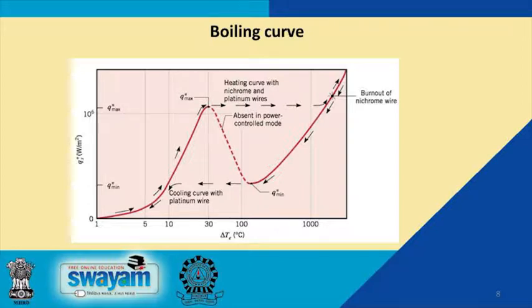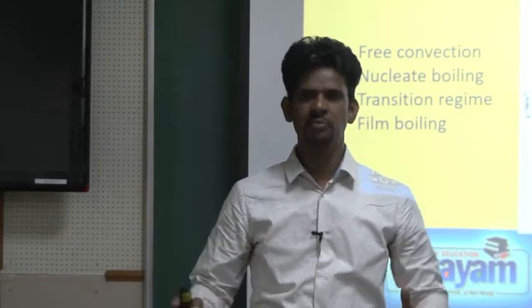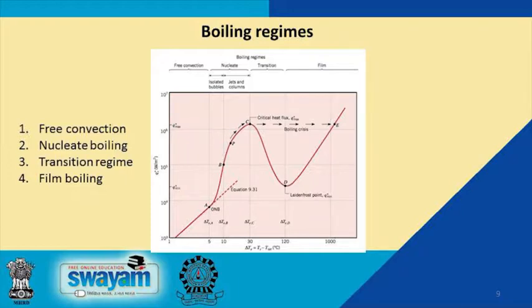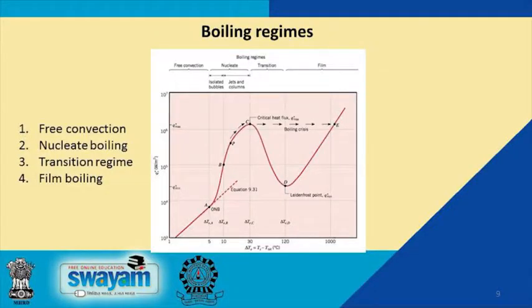On the forward path, once heat flux increases past the maximum, delta T jumps to a high value. On the reverse path, when heat flux decreases below the minimum, delta T suddenly becomes very small and switches back. To understand this boiling curve, the experiment is classified into four regimes: (1) free convection, (2) nucleate boiling, (3) transition boiling, and (4) film boiling. In each regime, different boiling mechanisms occur and the heat transfer coefficient differs.